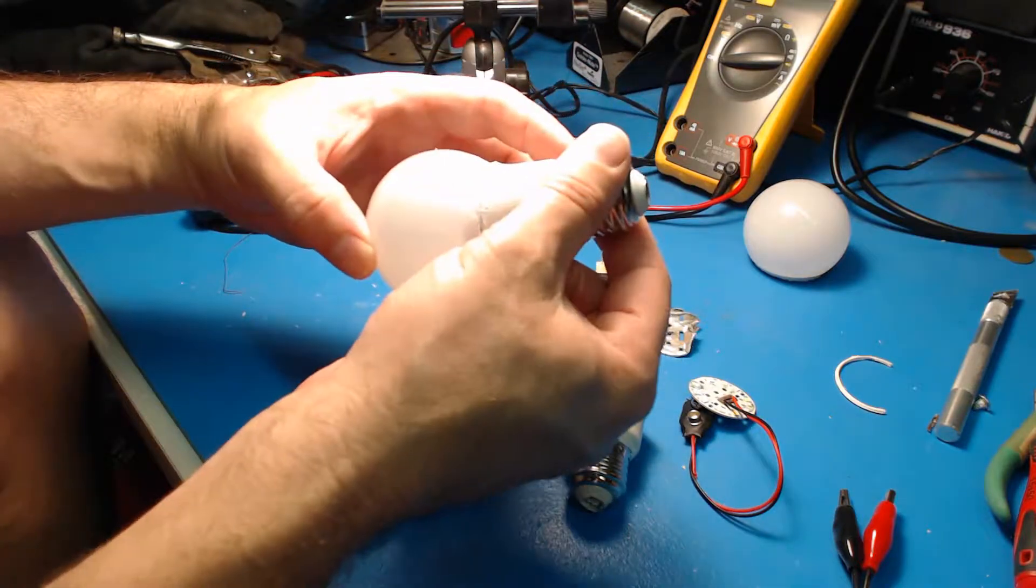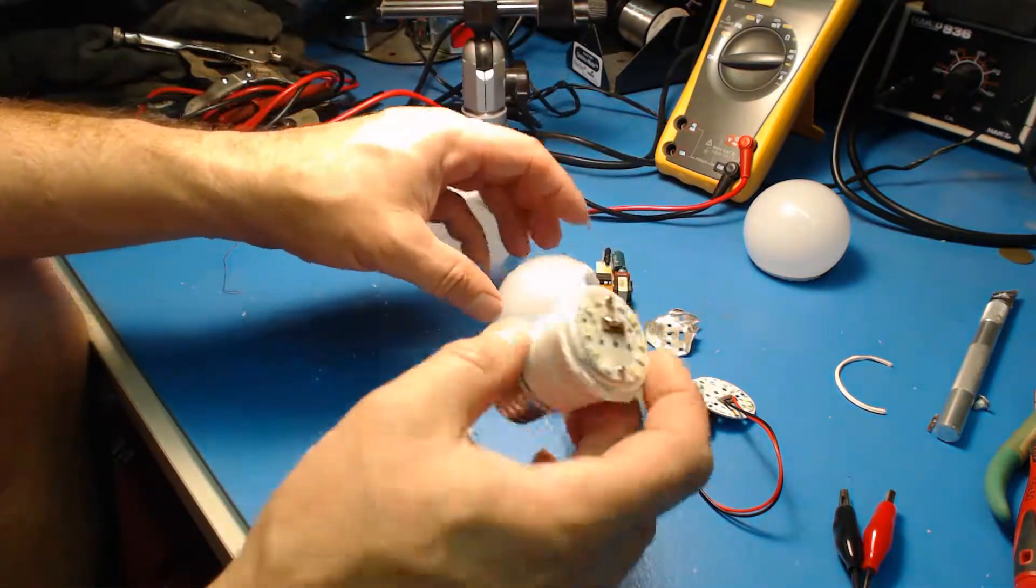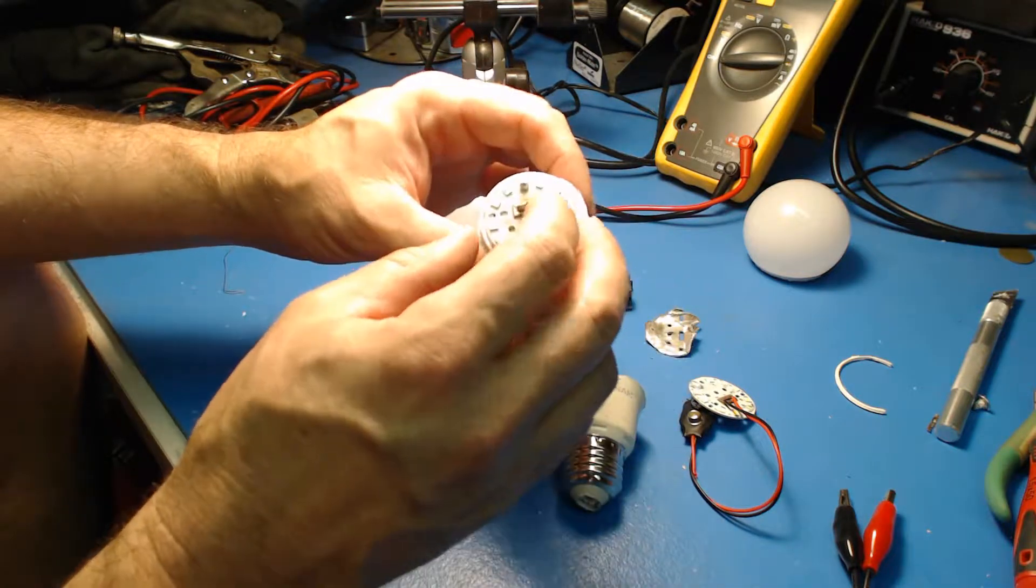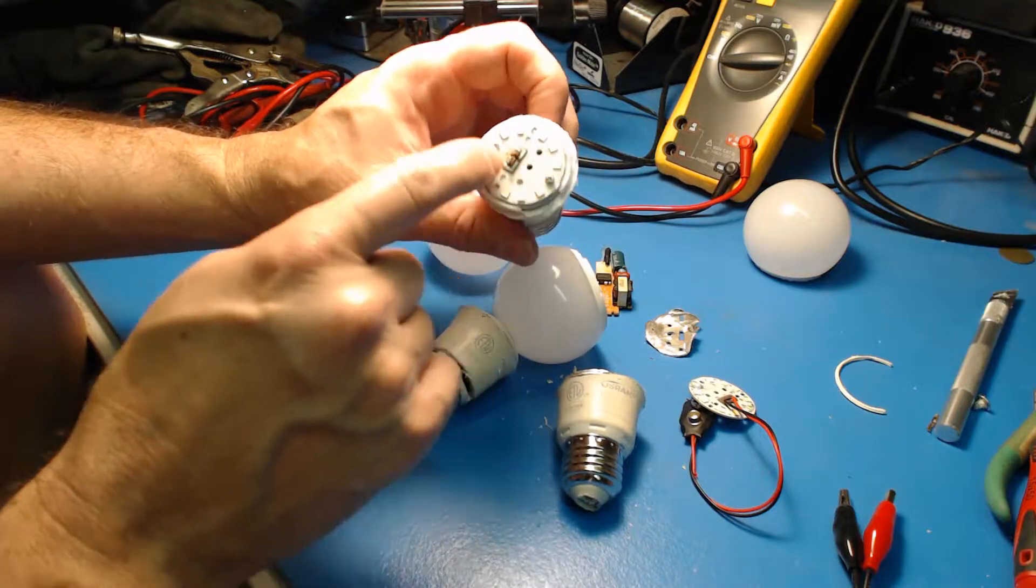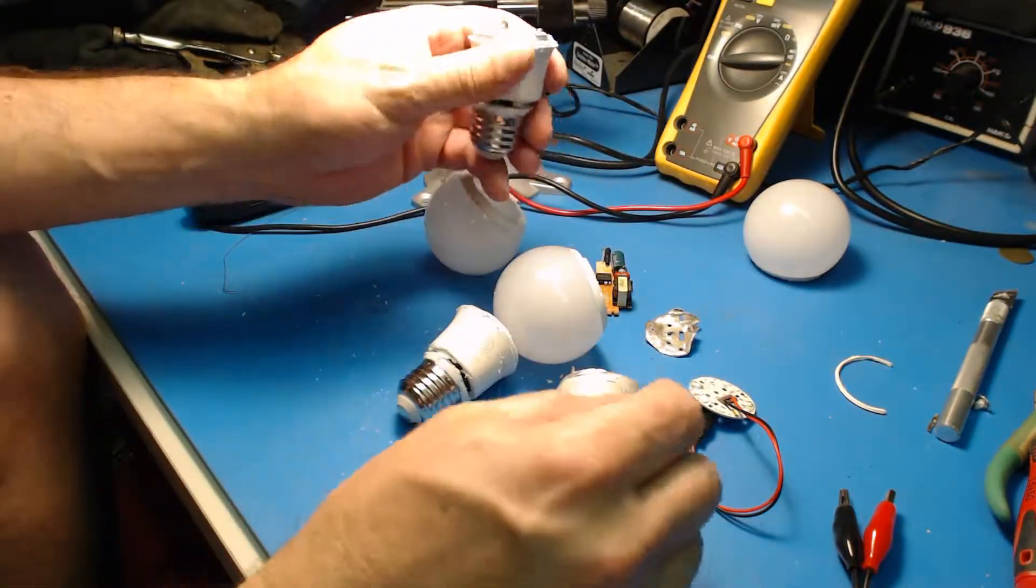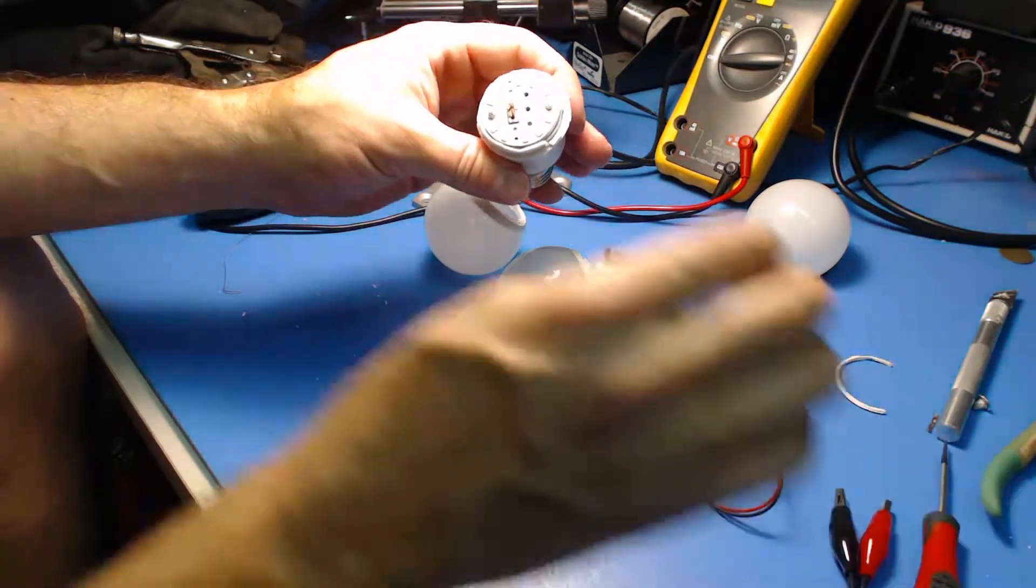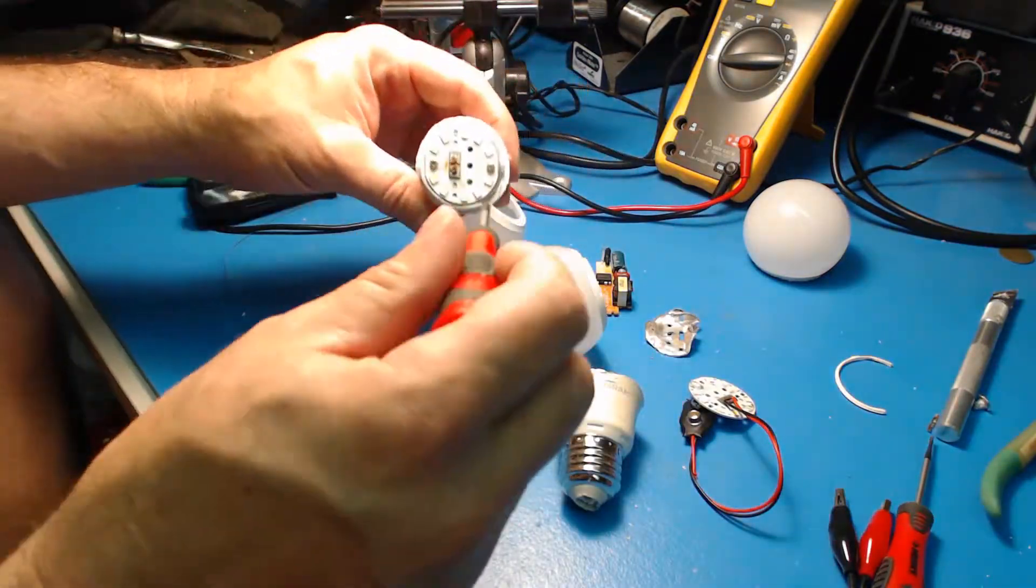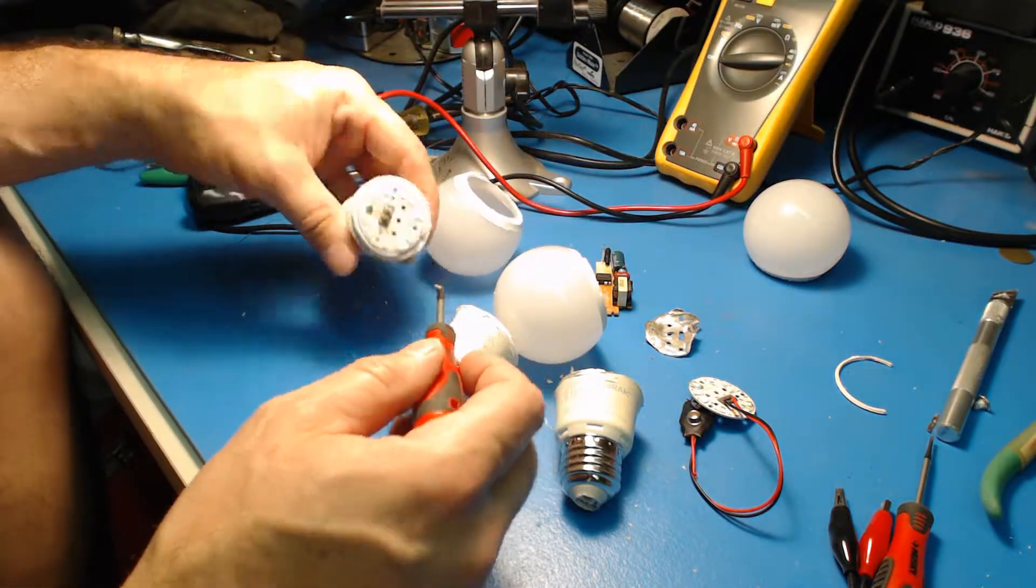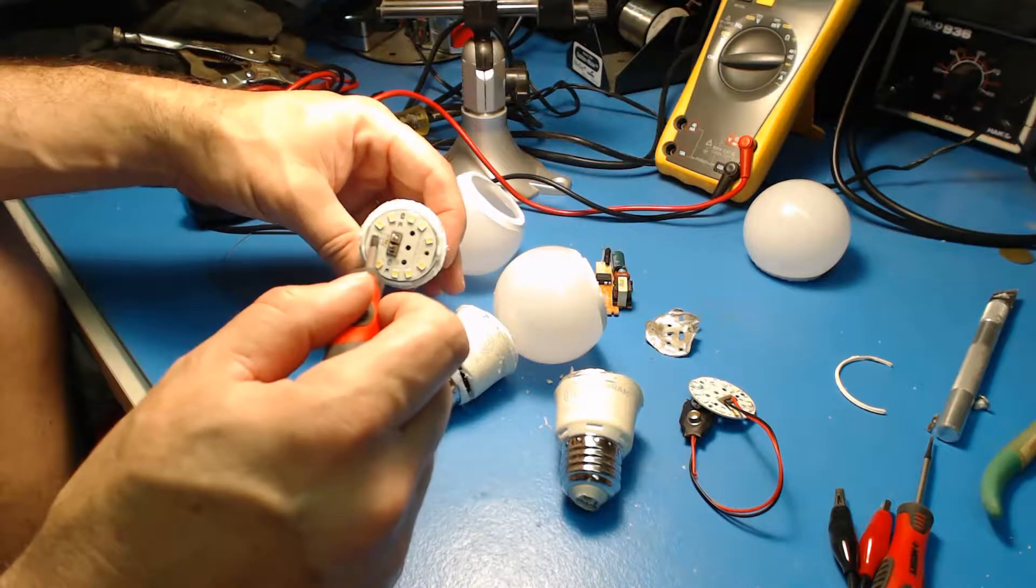And once you have that off, then you have the LED board, and it's just a matter of taking two screws out and desoldering two connections, which I'm going to do right now for this one.